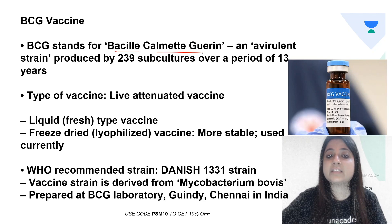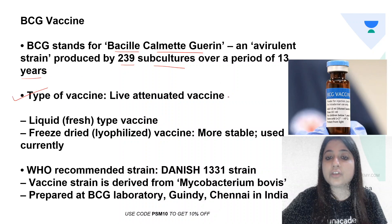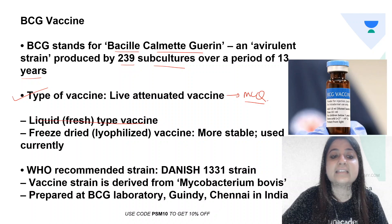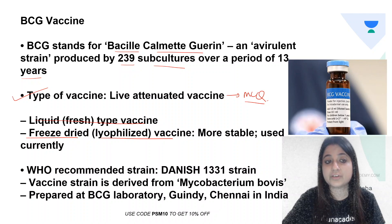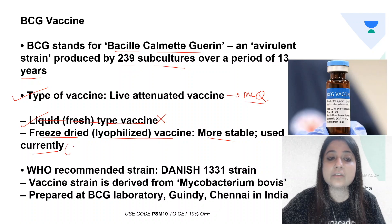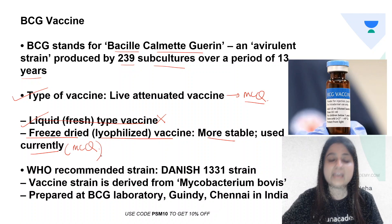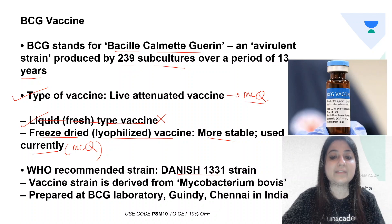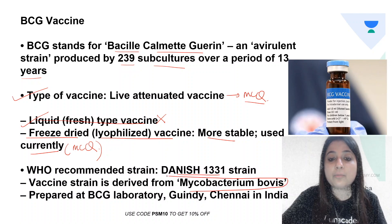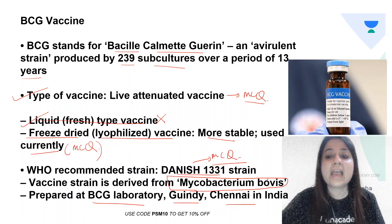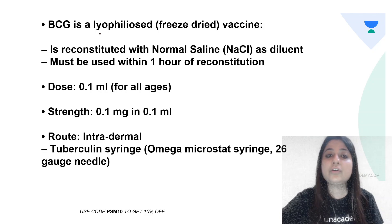BCG vaccine is a must-know vaccine. It is Bacillus Calmette-Guérin, a virulent strain produced by 239 subcultures over a period of 39 years — important for MCQ purposes. It is a live attenuated vaccine. It is available most importantly as a freeze-dried or lyophilized vaccine, which is very important and more stable. It was initially also available as a liquid type vaccine but this is no longer used. The vaccine strain is derived from Mycobacterium bovis, recommended as the Danish 1331 strain, prepared at the BCG lab, Guindy, Chennai, India.